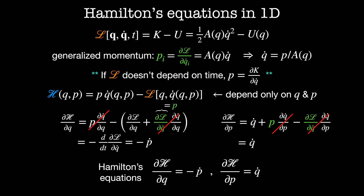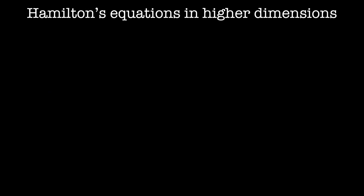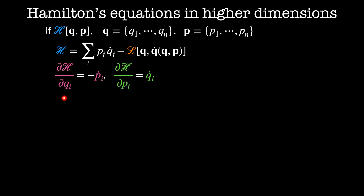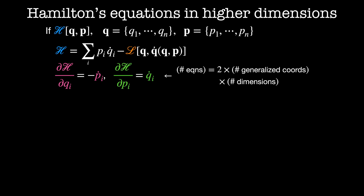These last two equations are called Hamilton's equations — a coupled set of first-order equations that tells us how to evolve the position and momentum of a physical system. What if our Hamiltonian is higher dimensional? Now the Hamiltonian is a function of the vectors Q, which runs from Q_1 to Q_n, and P which runs from P_1 to P_n. The Hamiltonian is the sum on i of P_i times Q_i dot minus the Lagrangian, which is a function of the vectors Q and Q dot, which is itself a function of the vectors Q and P. Hamilton's equations are now given by dH by dQ_i is equal to minus P_i dot and dH by dP_i is equal to Q_i dot. This gives us a set of coupled first-order equations, where the total number of equations is given by twice the number of generalized coordinates times the number of dimensions in the system.